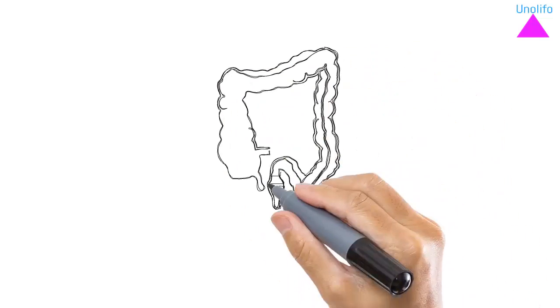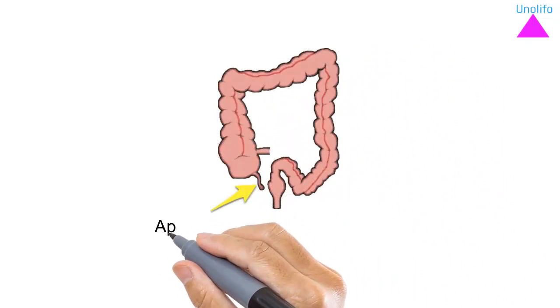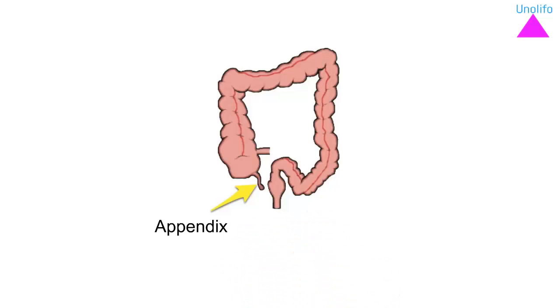The appendix is a worm-like tube that has only one end and is connected to the cecum in the right lower abdomen of humans. Its name is from the Latin word meaning worm-like.